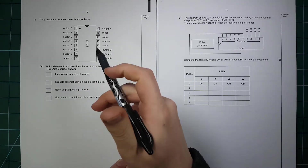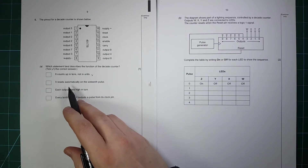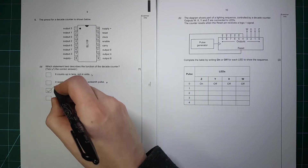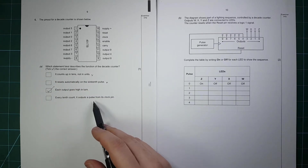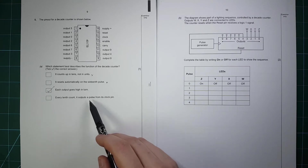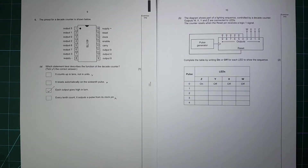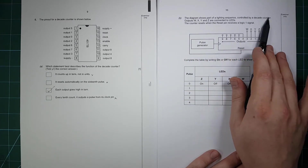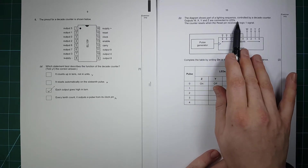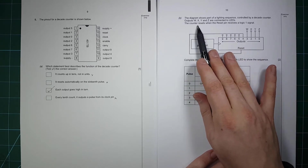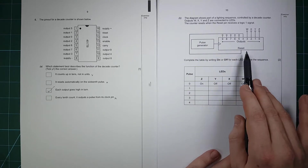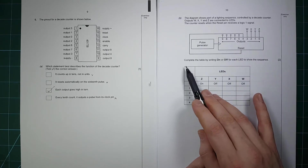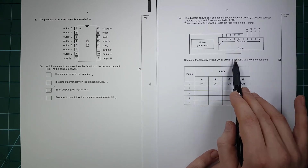Question 5 — we've got a decade counter. Which statement best describes its function? It counts up one at a time. It resets automatically on the 10th pulse. Each output goes high in turn — yes it does. Every 10th count, an output pulse from the clock pin — no it doesn't. Part B: the diagram shows part of a lighting sequence controlled by decade counter outputs W, X, Y and Z controlling LEDs. The counter resets when the reset pin receives a logical 1, so when output 4 goes high it resets back to zero.